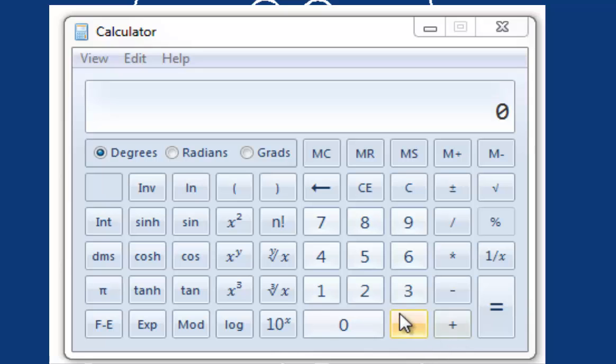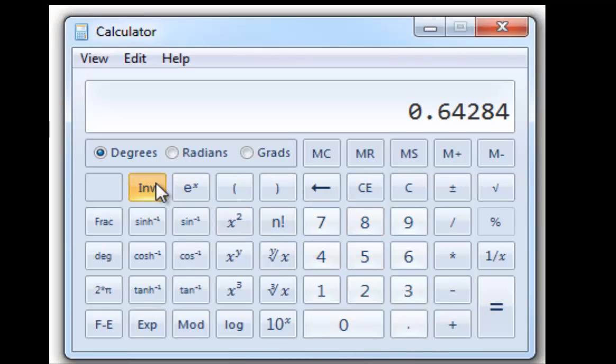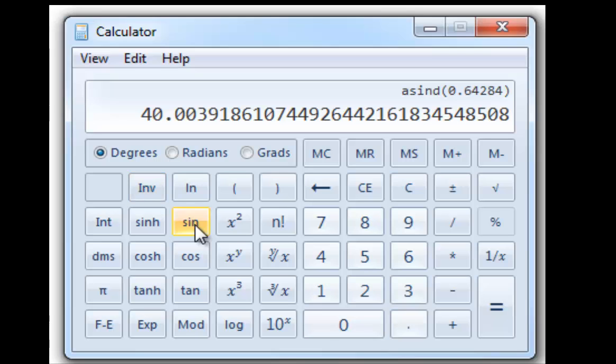I'll type .64284. And push this little button. You'll see that my sine key has turned into an inverse sine key. Now when I press the inverse sine button, I get an angle. Isn't that the cat's pajamas? My angle is just a tiny bit more than 40 degrees.